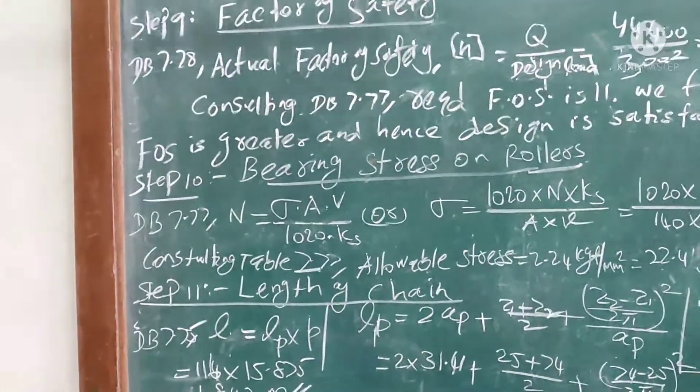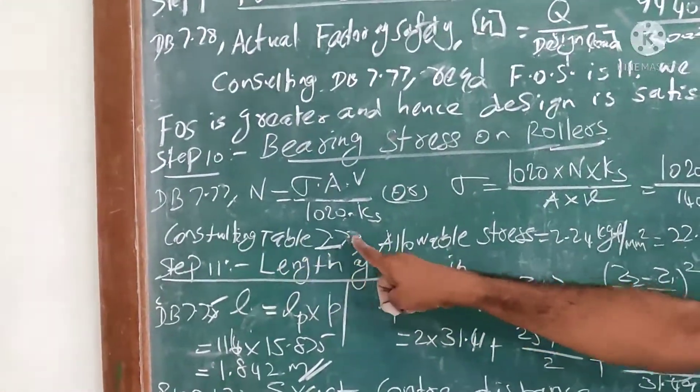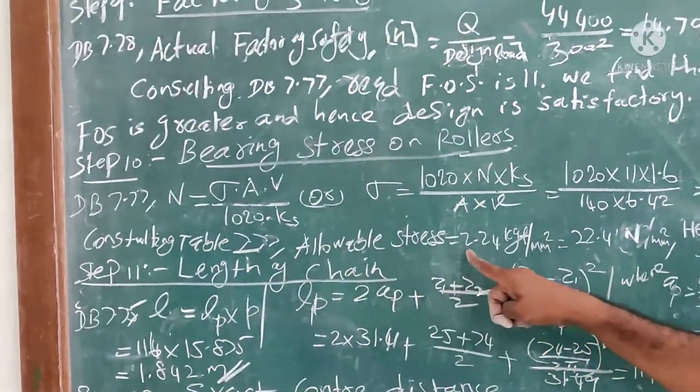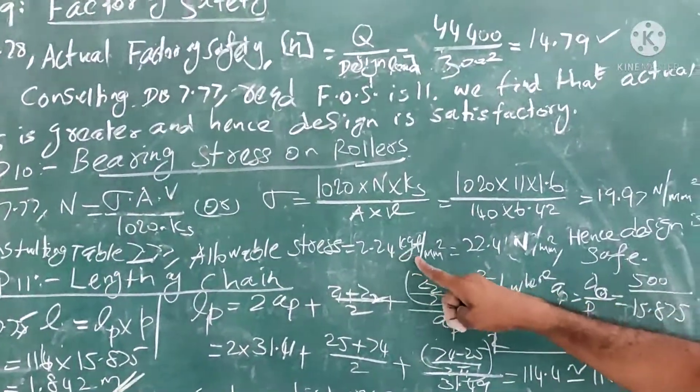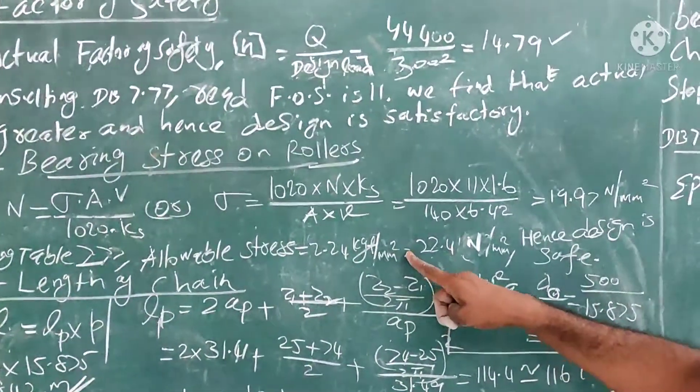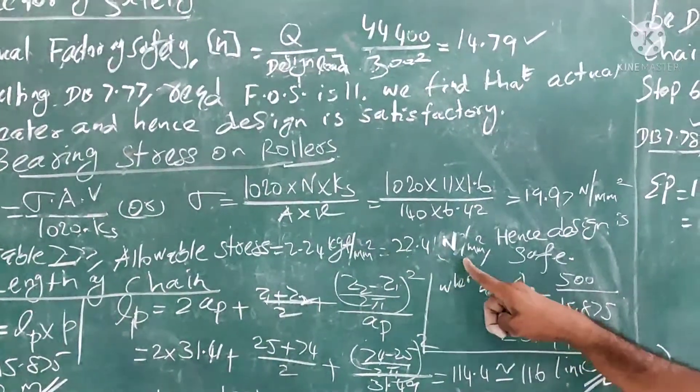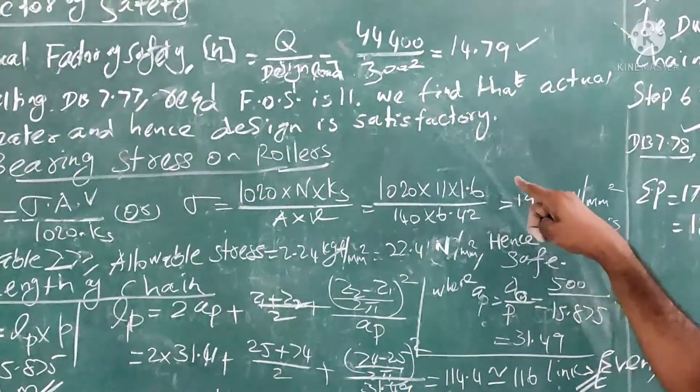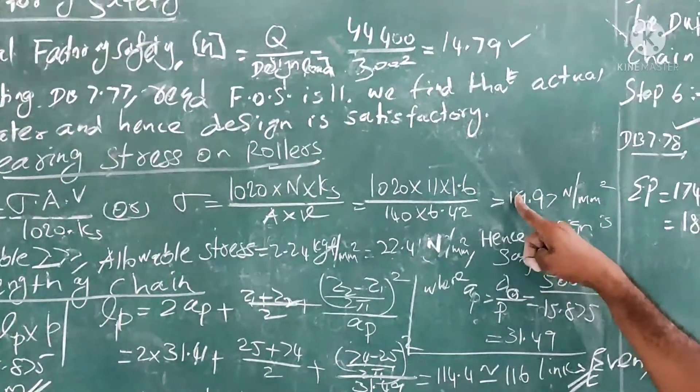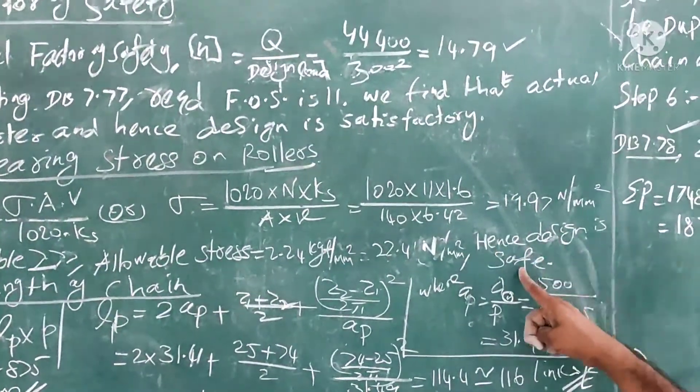Now we want to verify this value. For this, consulting table 7.77, allowable stress is given as 2.24 kg/mm². We convert into N/mm², that value is 22.4. It is greater than the actual induced bearing stress, so our design is safe.